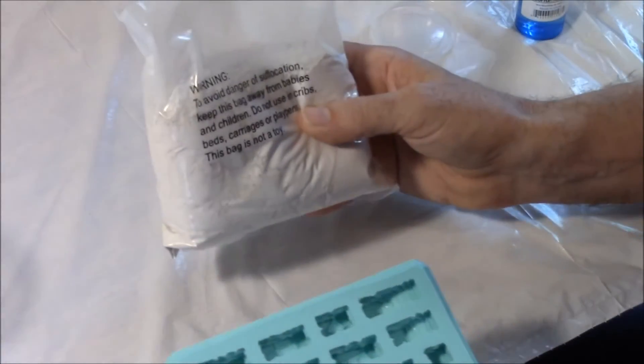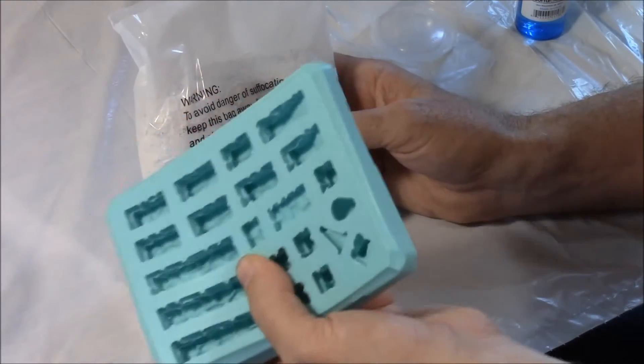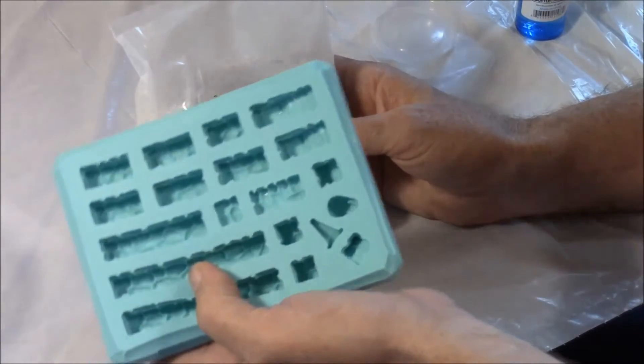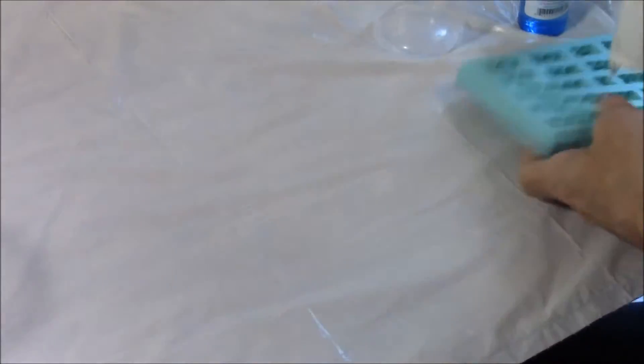But for Plaster of Paris, 2 ounces of water will fill up an average size mold. Now all the molds are different, so if you've got something like the pyramid mold, it's going to take a little bit more than that. So let's start with 2 ounces of water.